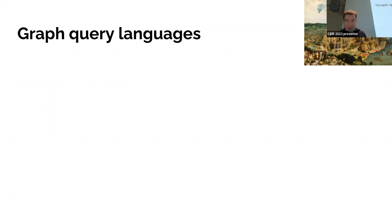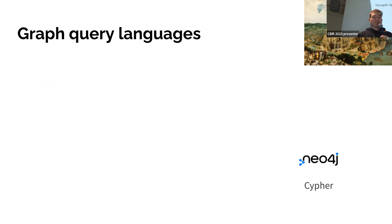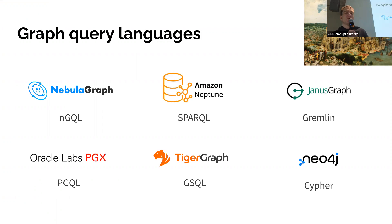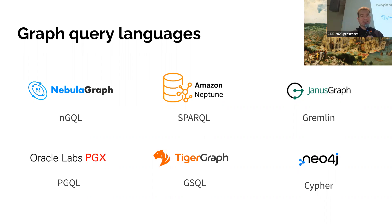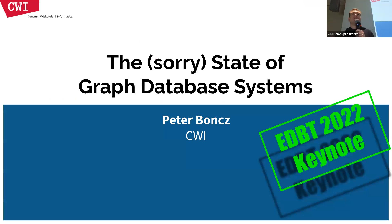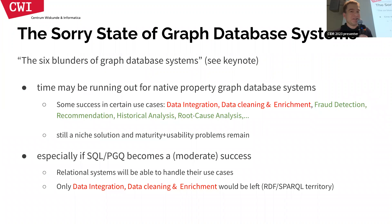Some people like writing these recursive queries, but others find them long, difficult to understand and maintain. This is one of the reasons that graph query languages have been proposed — many of them, hence the Tower of Babel picture. These are examples of native graph systems, each with different query languages. I gave a keynote last year — the 'EDBT keynote' — titled 'The Sorry State of Graph Database Systems,' which you can look up. One of the things I talk about there are the six blunders of graph database systems architecture.